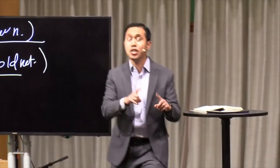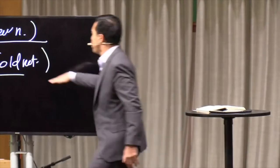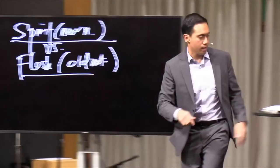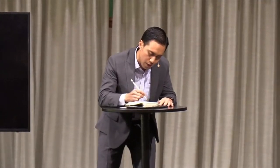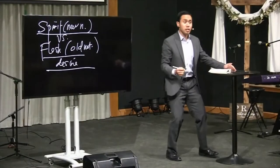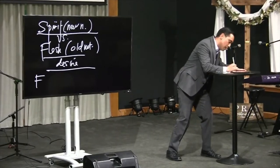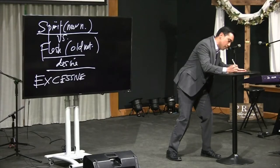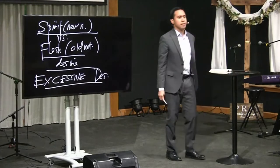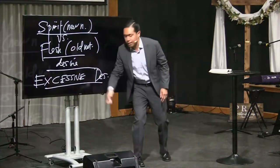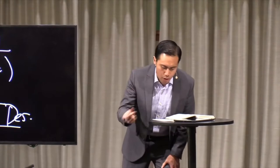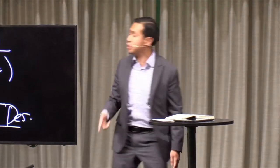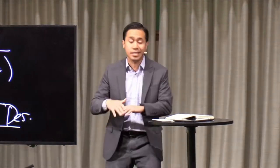So you see what's going on in this battle? The spirit has certain desires, but the flesh has certain desires. Now, I didn't know this, but when I was studying for this teaching, the word in the Greek for desire here, do you know what it really means? It means excessive desire. That's what it means in the Greek. That the spirit or the flesh desires what is contrary to the spirit. What kind of desire? It's an excessive desire.